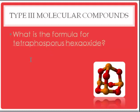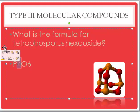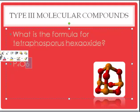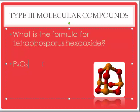What's the formula for tetraphosphorus hexaoxide? Phosphorus is P, and we have four of them. We have six oxygens. So it's P4O6. That's tetraphosphorus hexaoxide.